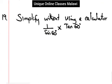Without using a calculator, simplify 1 over sin 60 multiplied by 6. These are special angles — you can watch my previous video where I was working through special angles.